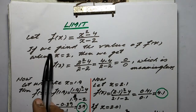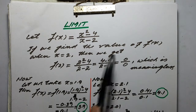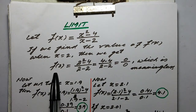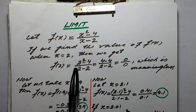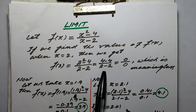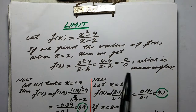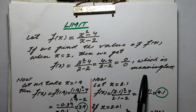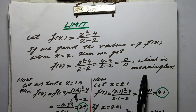Now suppose if we want to find the value of f(x) when x is equal to 2, then f(2) is equal to 2 squared minus 4 upon 2 minus 2, which is equal to 4 minus 4 upon 2 minus 2, which is equal to 0 upon 0 — which is meaningless. In mathematics, 0 upon 0 is considered to be meaningless; it has no meaning.